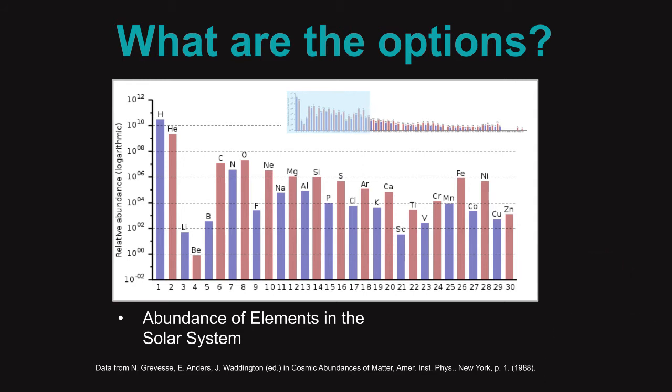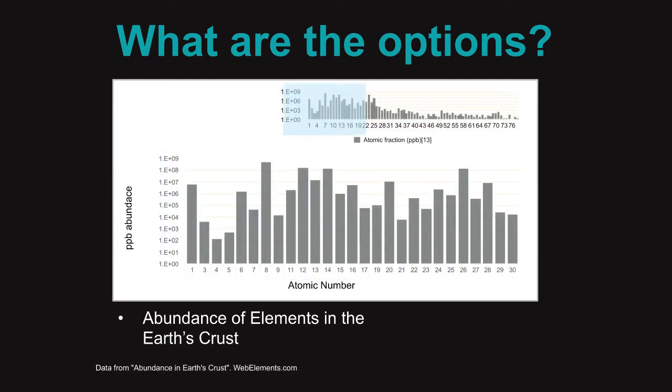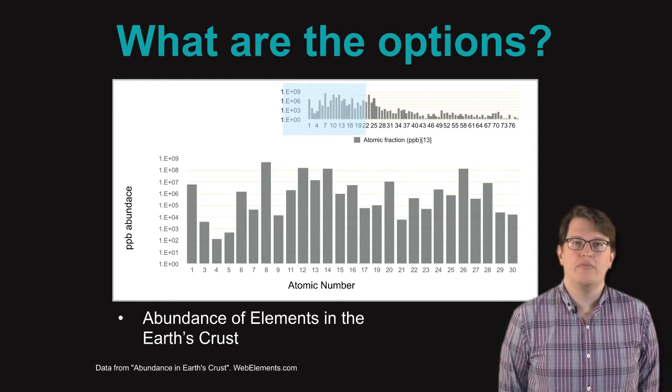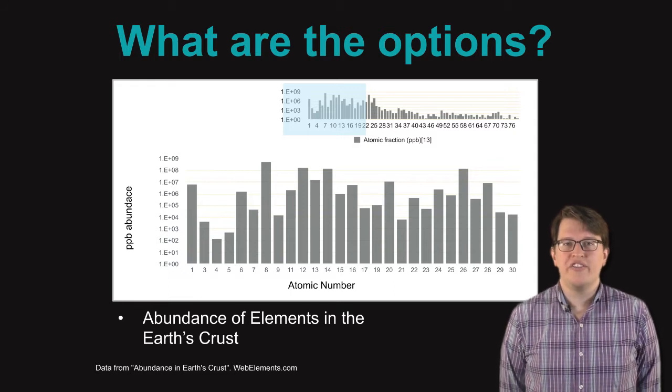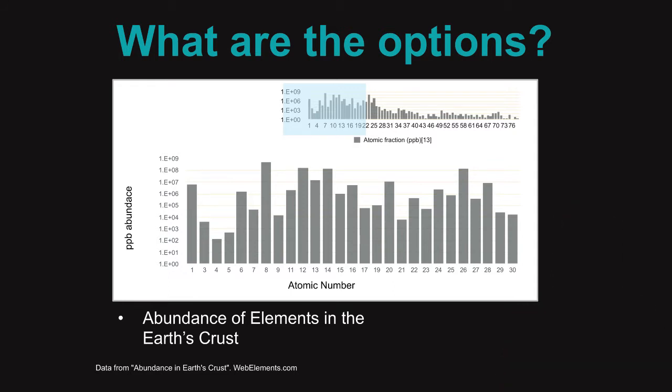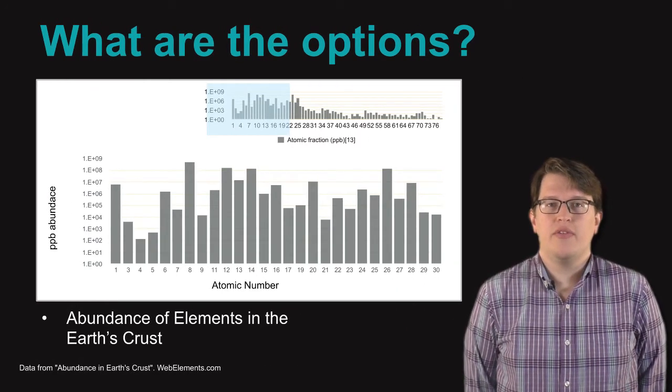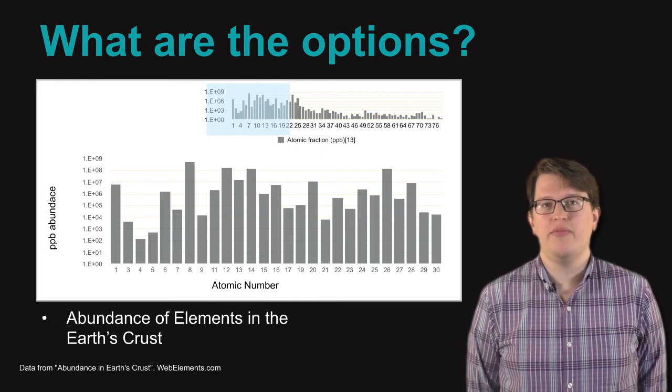But this is the solar system. We need to narrow in our focus and talk a bit more about Earth. The options here on Earth are a bit different, but you can see that hydrogen, carbon, and oxygen are still all relatively high abundance. You should note as well that this is a logarithmic scale, which means that every unit is 10 times larger than the rest. Looking at the elements that are available, we have hydrogen, carbon, and oxygen, but then we have others.